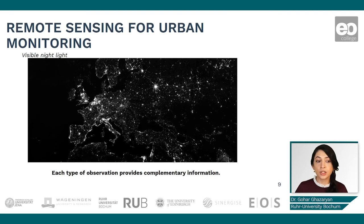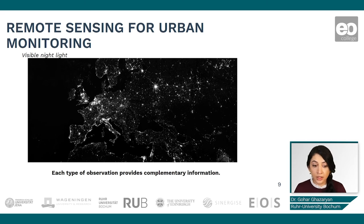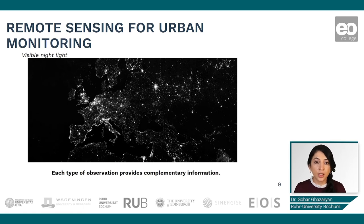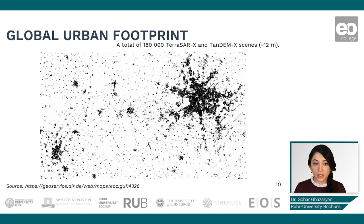Another source of information is visible night light data, which can be used not only for identifying urban areas but also for analysis of economic activities and energy consumption. All these datasets can be used independently or in synergistic ways to map and monitor urban areas, and besides this raw data, there are also ready-to-use datasets describing different aspects of urban areas.